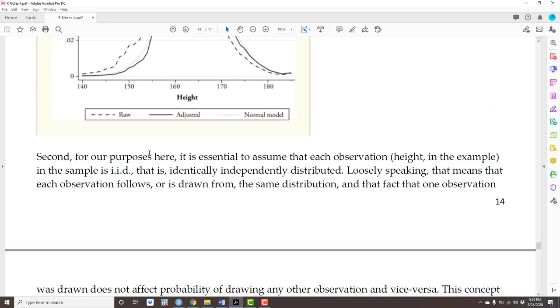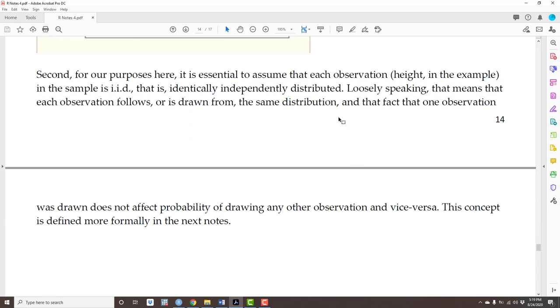Second, for our purposes here, it is essential to assume that each observation, height in the example, is identically, independently distributed. Loosely speaking, that means that each observation follows or is drawn from the same distribution, and the fact that one observation is drawn does not affect the probability of drawing another observation and vice versa. For instance, we cannot have a sample where everybody is from the same family. Why? Because their heights wouldn't be independent. The height of fathers, for instance, is correlated to the height of sons. But we're going to study this concept more formally later. Just remember that throughout these notes, our observations are identically and independently distributed for now.